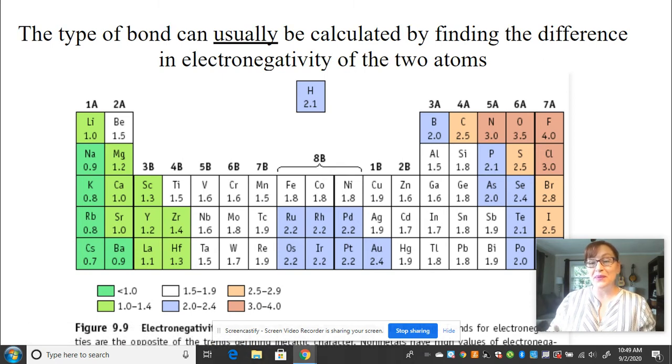Another way you can figure out the type of bond between two atoms is to look at how electronegative those atoms are. So electronegativity is the ability of an atom to pull electrons off of another atom.